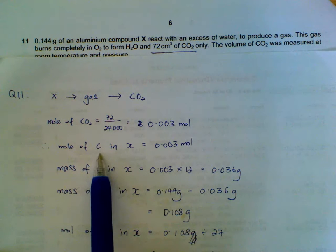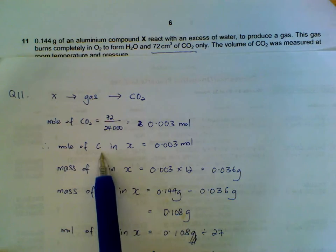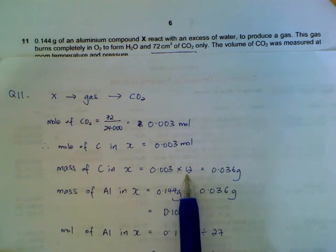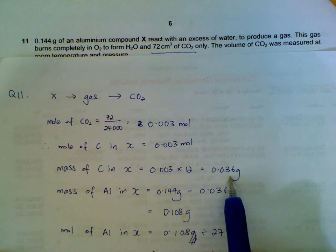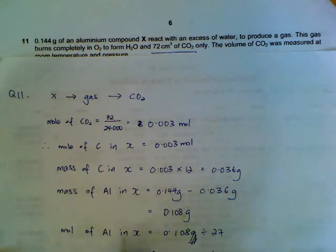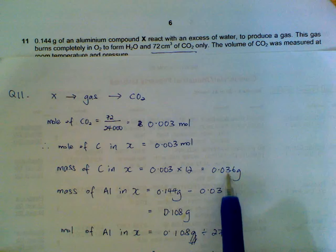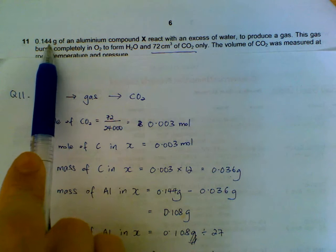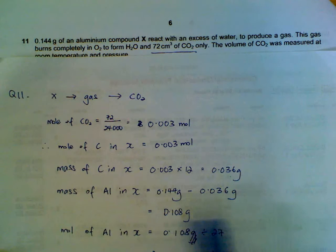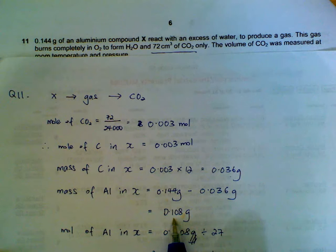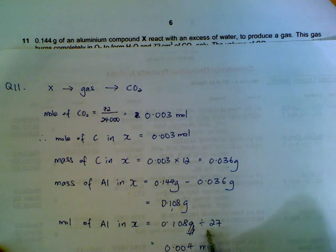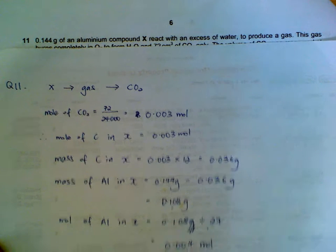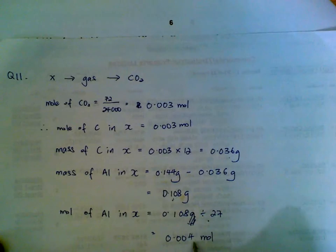So once we have this moles of carbon dioxide, or moles of carbon in X, we find a mass multiplied by the AR, this is the mass of carbon in X in the first place, 0.036 grams. And then, how do we find a mass of aluminium? We have the mass of carbon, this is the mass of the total, we take the difference, we have the mass of aluminium. Once we have the mass of aluminium, we find out the moles of aluminium, we divide by 27, which is the AR of aluminium, we have 0.004 moles of aluminium.